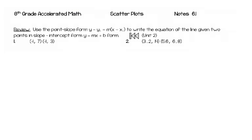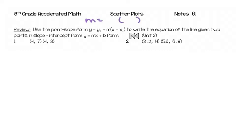Learning about scatter plots — just to review, there are a couple of skills that we're going to be using a lot. We learned about point-slope formula, where we write the equation of a line if we have a point and a slope. So for example, if I give you a slope and I give you an ordered pair, then you have a point and a slope.